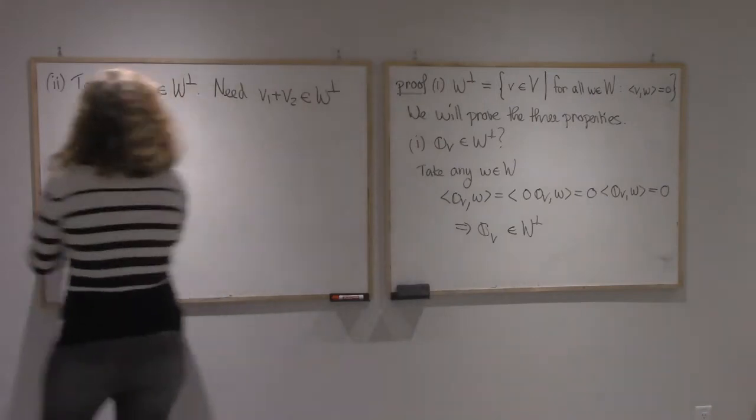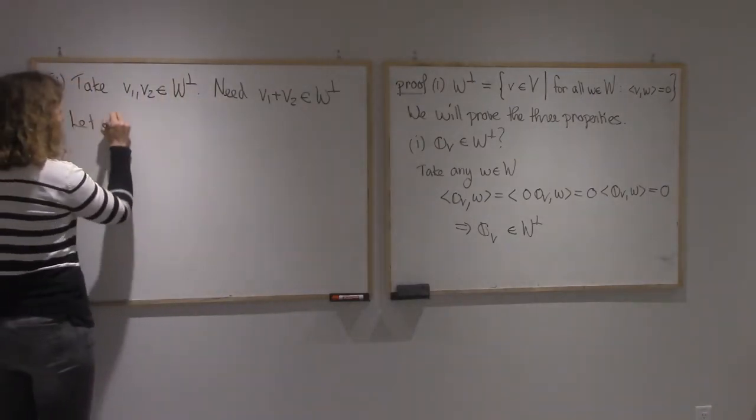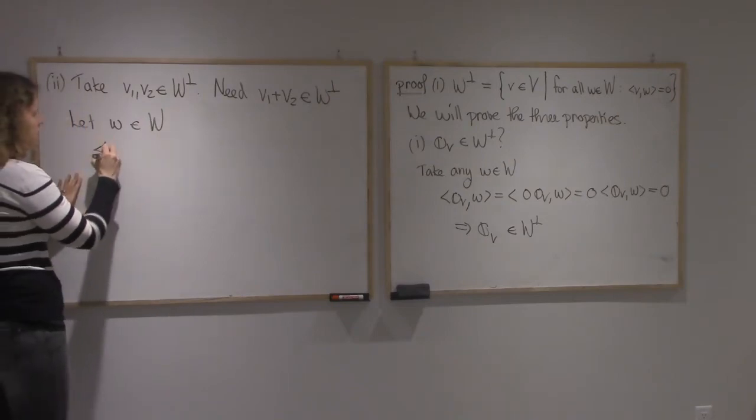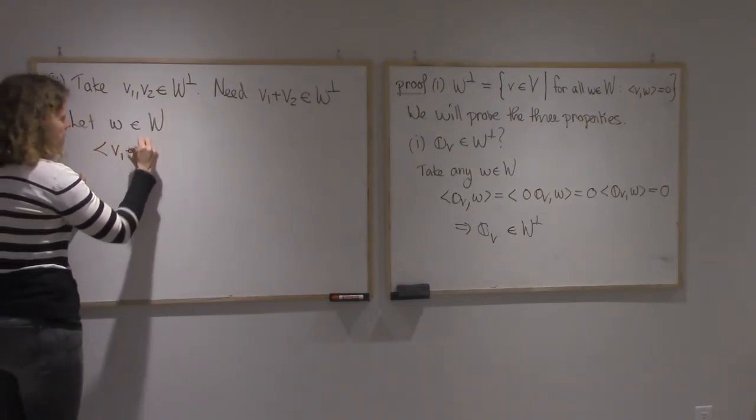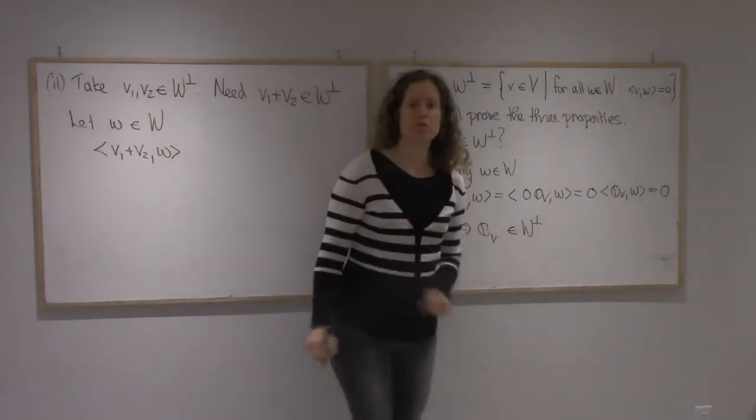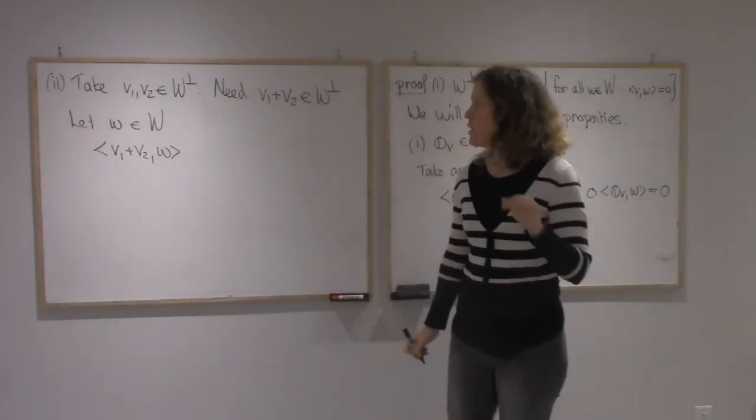So I'm going to take w to be in W. And now I need to look at whether this quantity here, this condition for v equals v1 plus v2, whether it is zero.